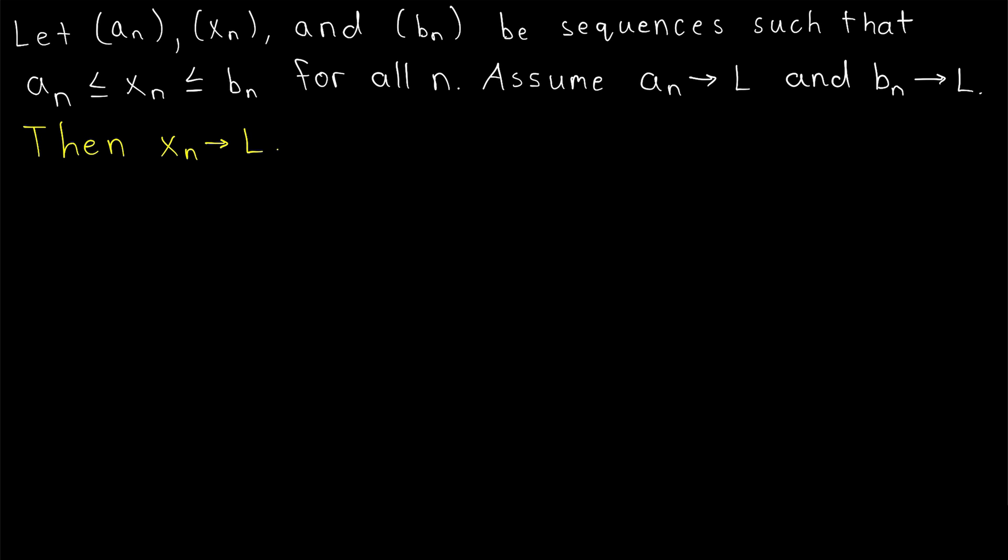Assume that a_n and b_n both converge to L. Then, the squeeze theorem tells us that x_n must also converge to L.